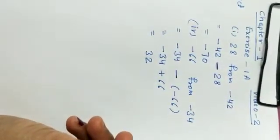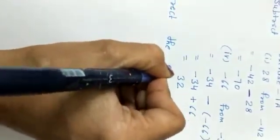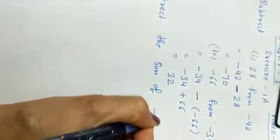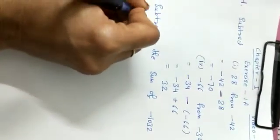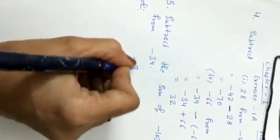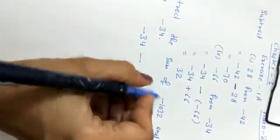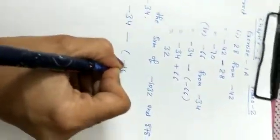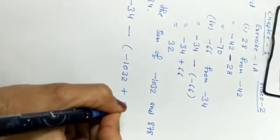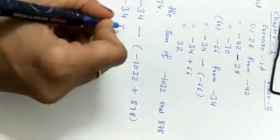Question number 5: subtract the sum of two numbers — minus 1032 and 878 — from -34. We write -34 minus (their sum in a bracket): -34 minus (-1032 + 872). We will solve this as a simple equation as done in class 6.